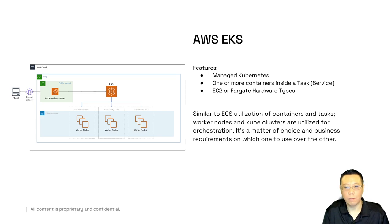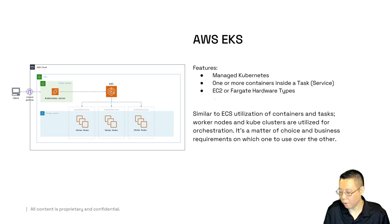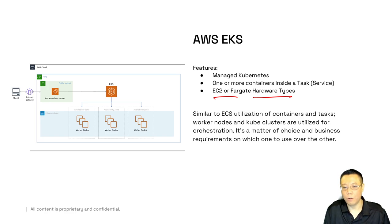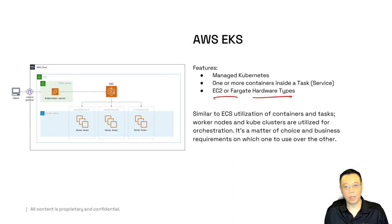AWS EKS means managed Kubernetes. You might have worker nodes equivalent to ECS tasks. You can have EC2 or Fargate-based hardware launch types — same premise, just using Kubernetes. AWS manages it for you so you don't have to worry about managing infrastructure to manage your container-based infrastructure. If you want to utilize the same technology used on-premise without a training context switch, consider EKS first with the Fargate type — it eases your way in and potentially puts things behind load balancers for additional security.